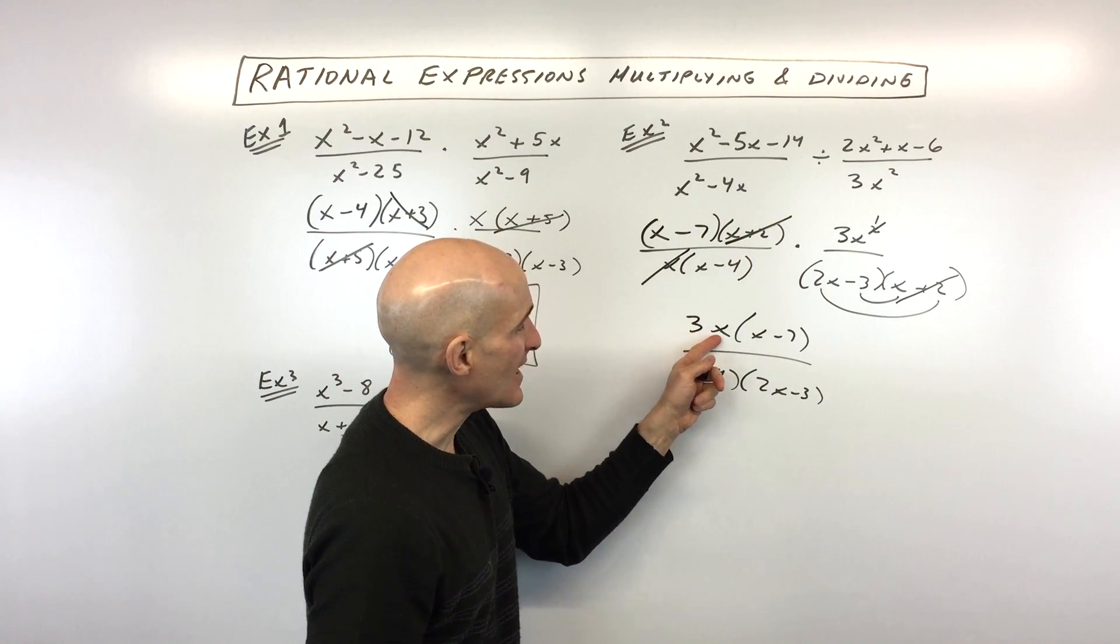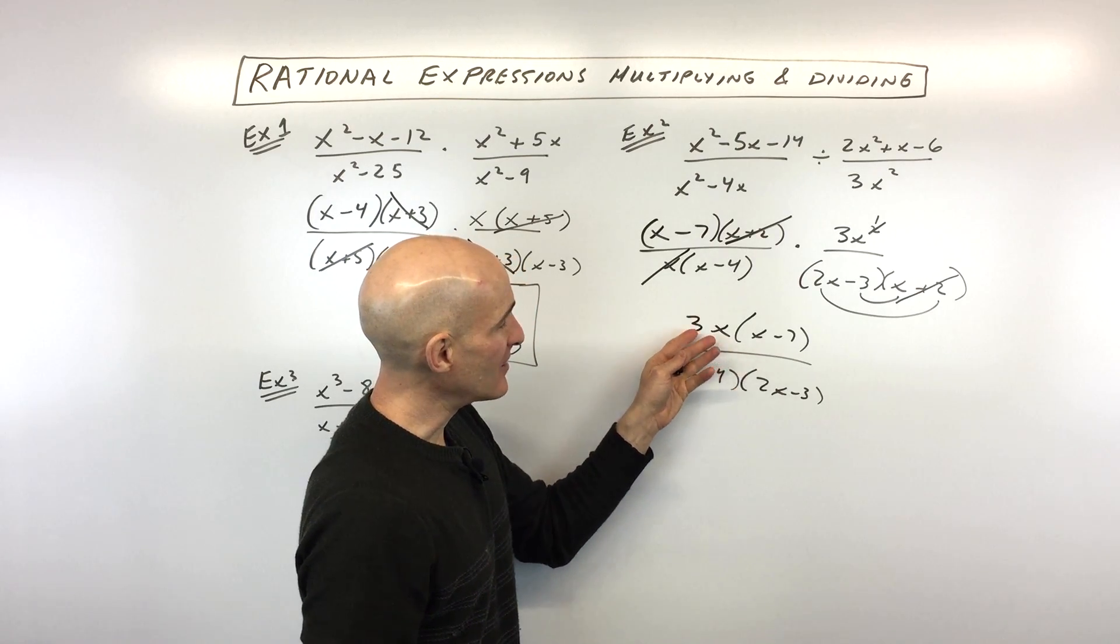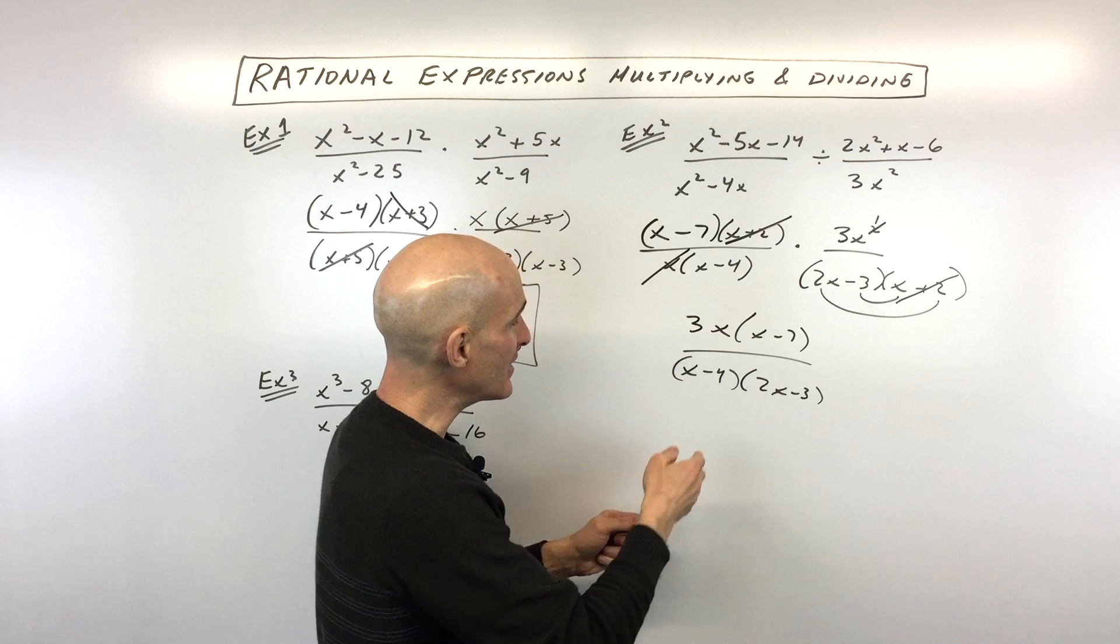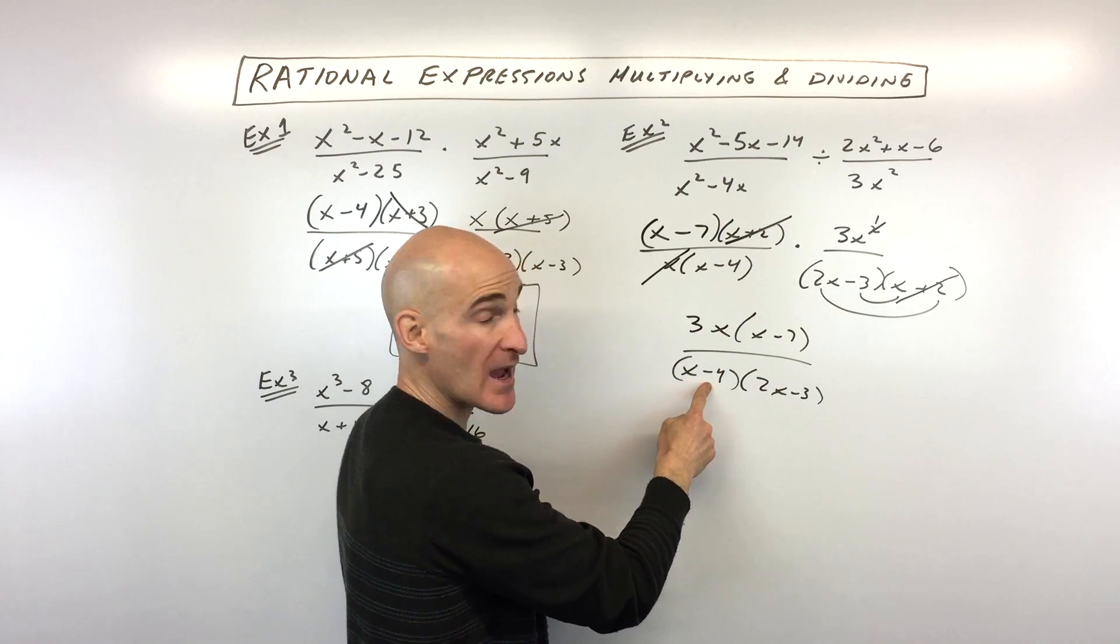Here you can see, like, this is 3 times x. But this is x minus 4. Here you're multiplying. And here you're dividing. But you can see these are really not multiplied together. If this was, like, 4 times x, then we could reduce top and bottom.